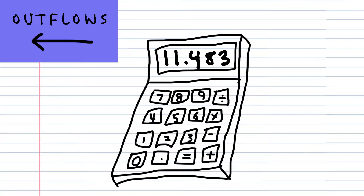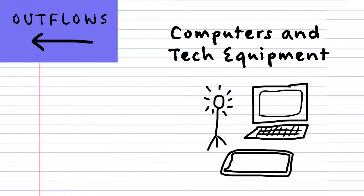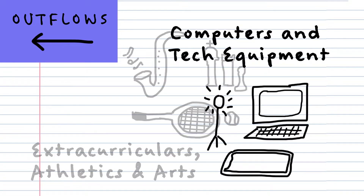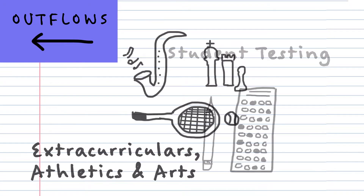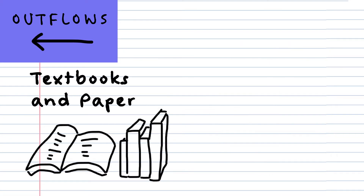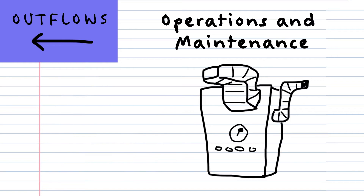The formula also takes into account the cost of things like computers and other tech equipment, student activities like extracurricular, athletics and art programs, student testing, supplies like textbooks and paper, and school building operations and maintenance like utilities, insurance and upkeep.